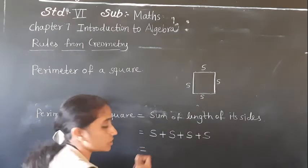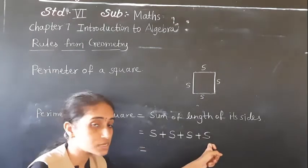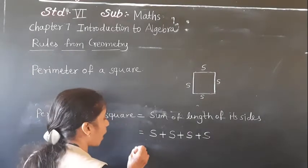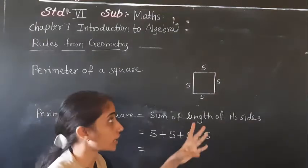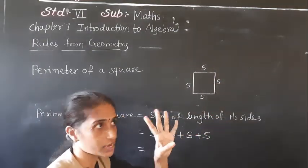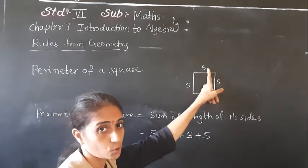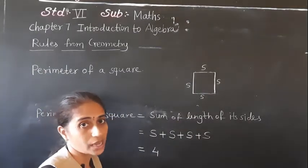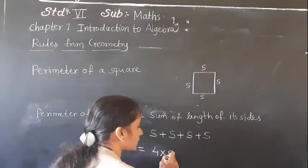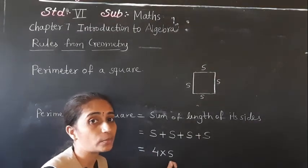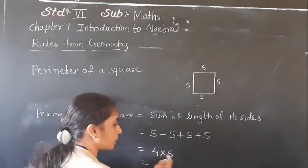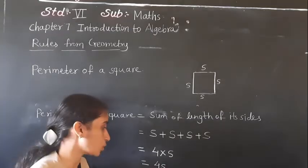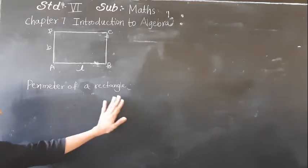So how many times is S given? 4 times. There are 4 sides and we use the letter S, so 4 times S means 4 multiplied by S, which equals 4S. So the perimeter of a square is 4S. Now, perimeter of rectangle.